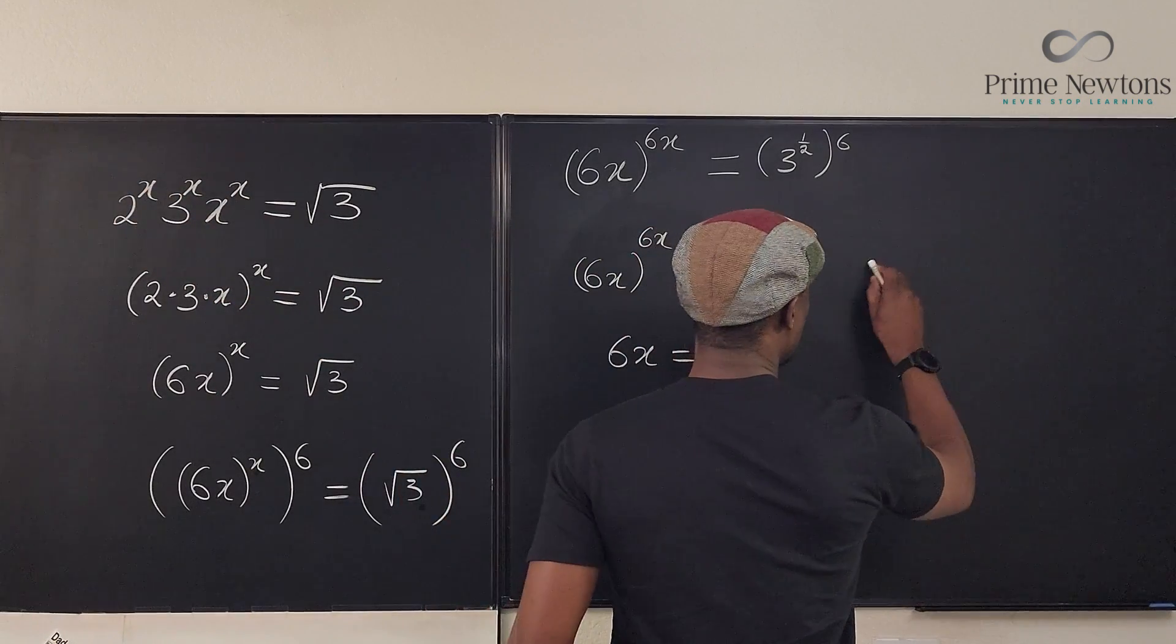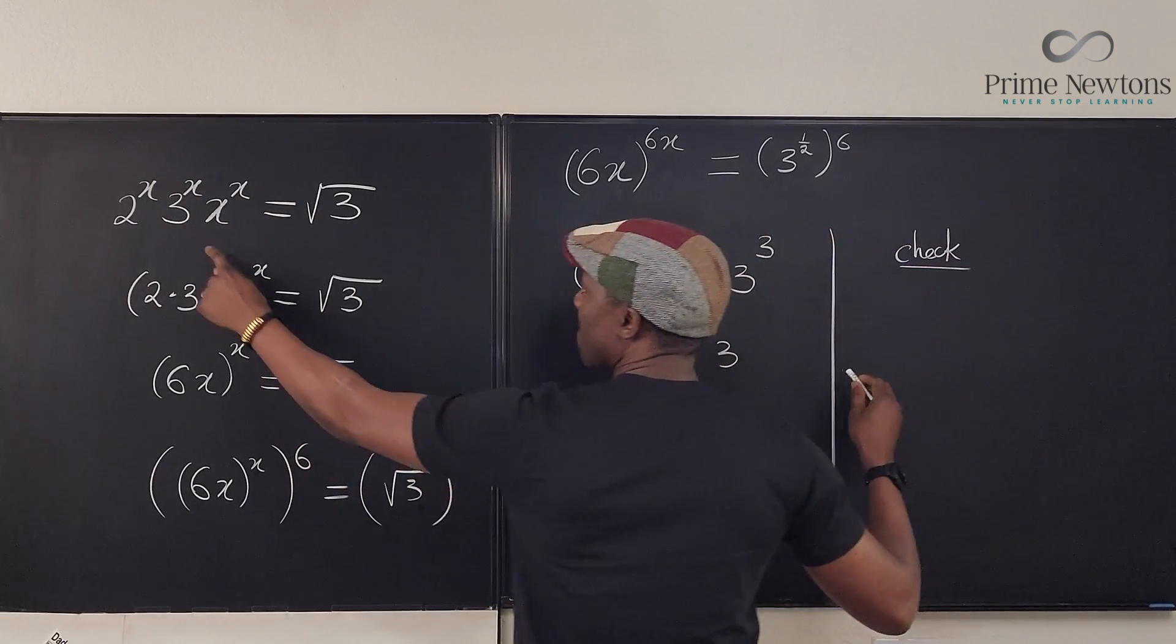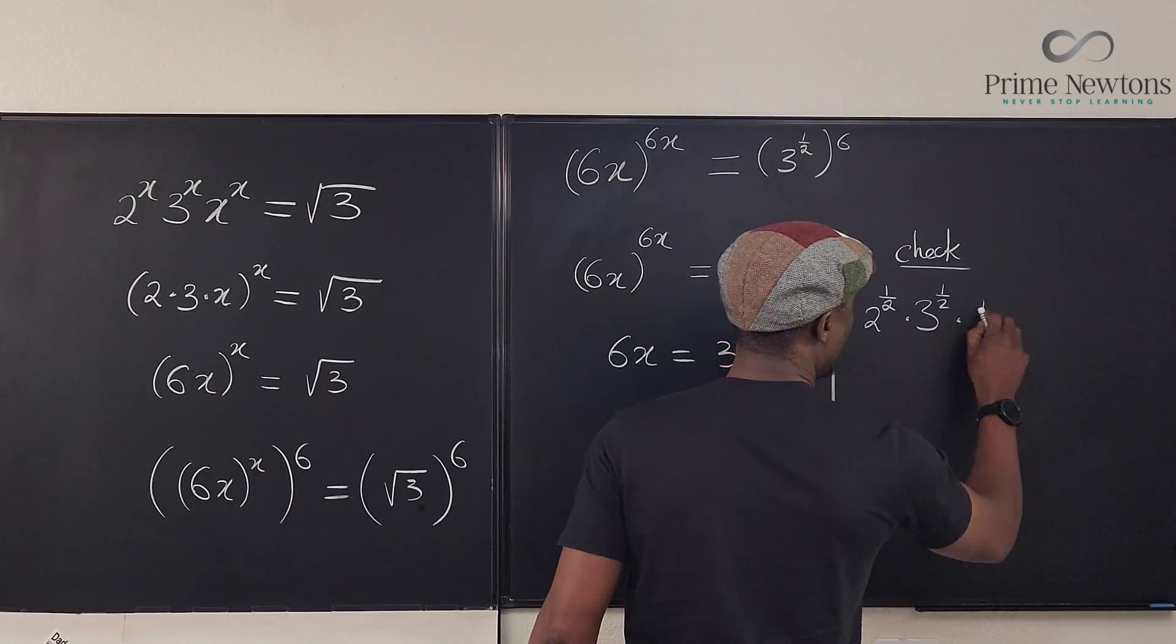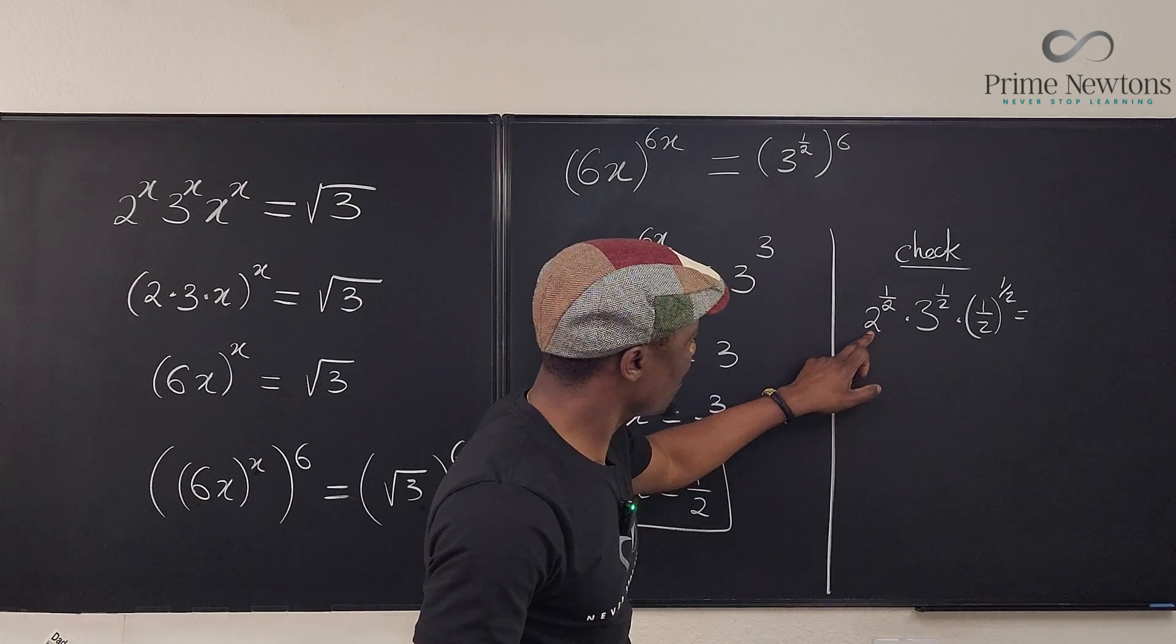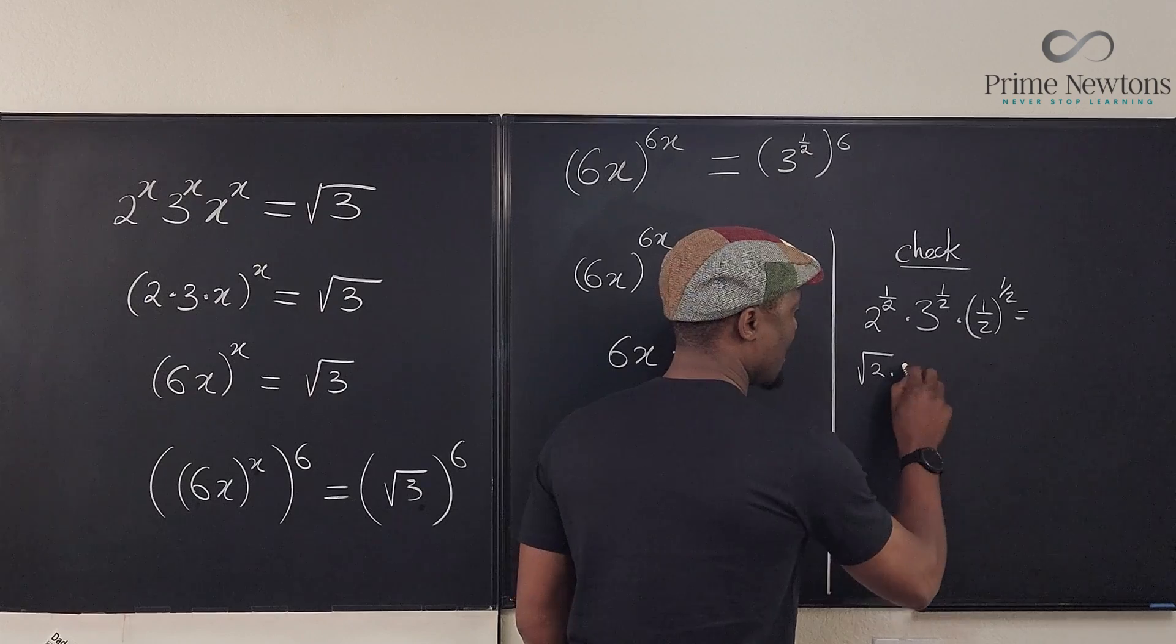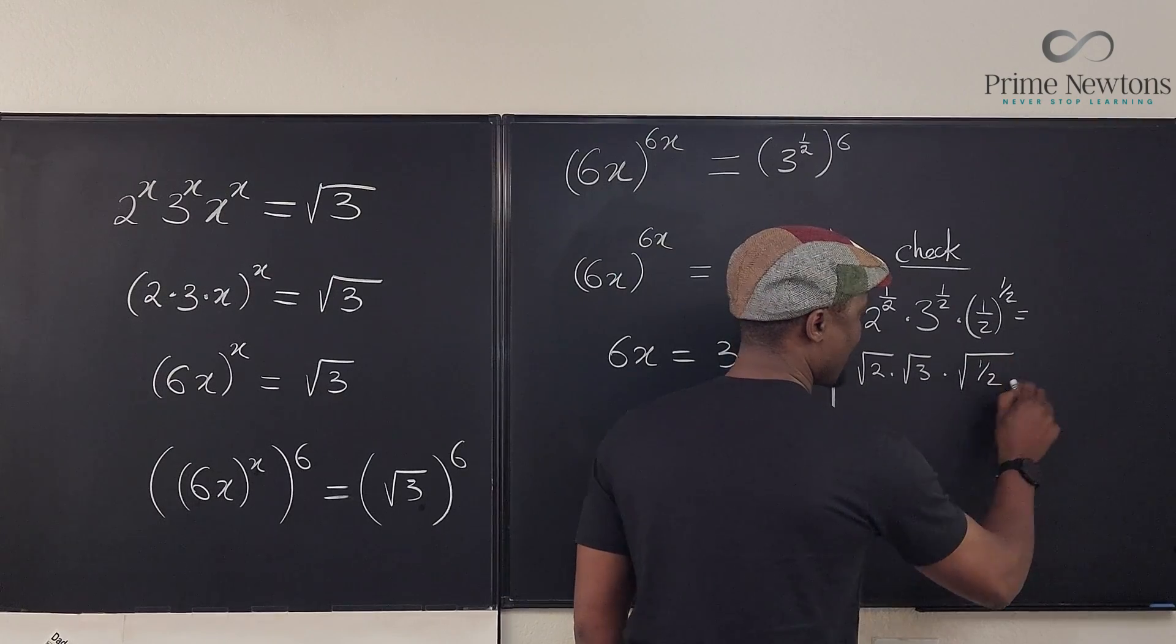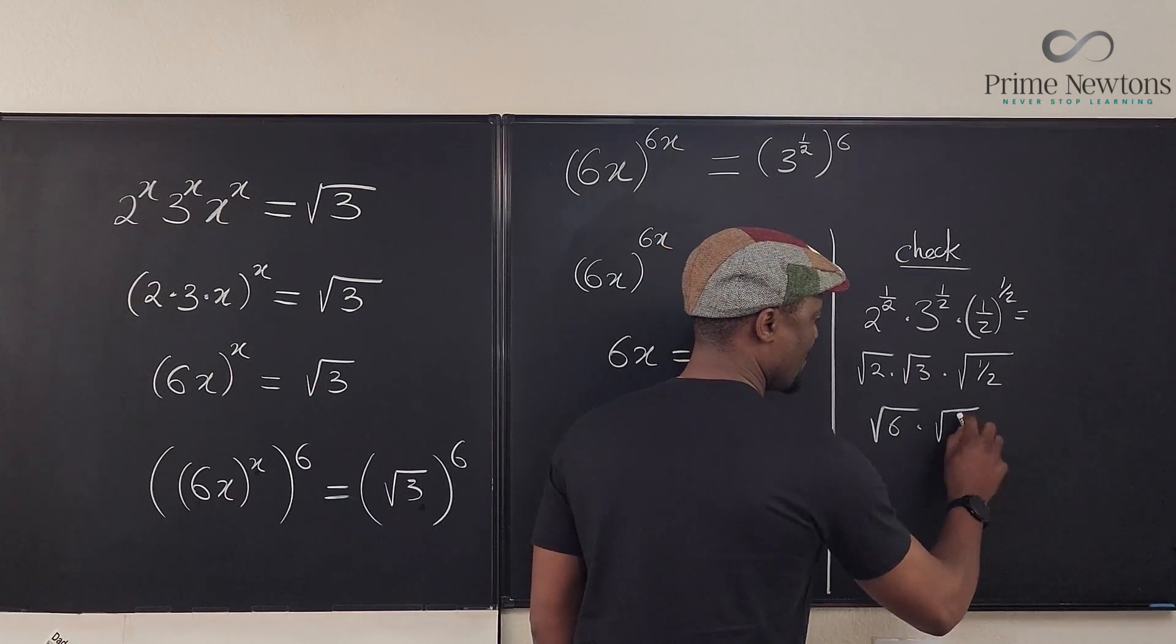We're going to have 2 to the 1 half multiplied by 3 to the 1 half multiplied by 1 half to the 1 half. Well, this is the square root of 2 times the square root of 3. Well, that's the square root of 2 times the square root of 3 times the square root of 1 half. That's the square root of 6 times the square root of 1 half.